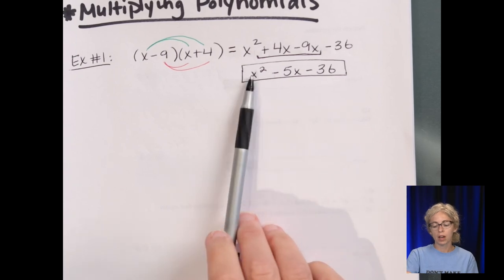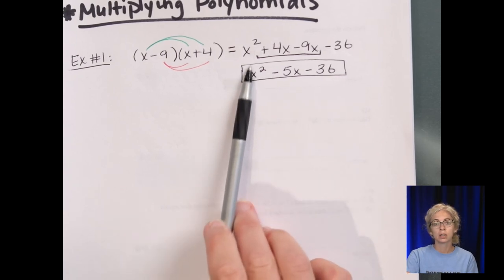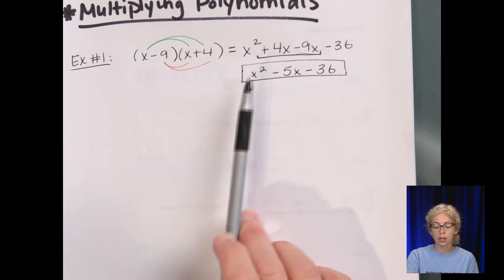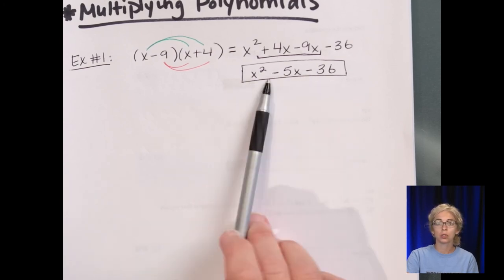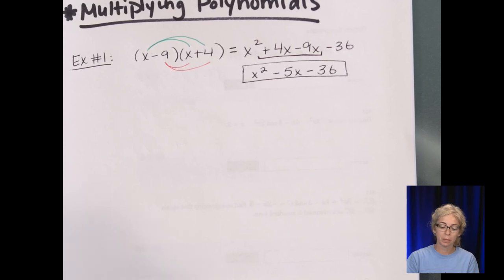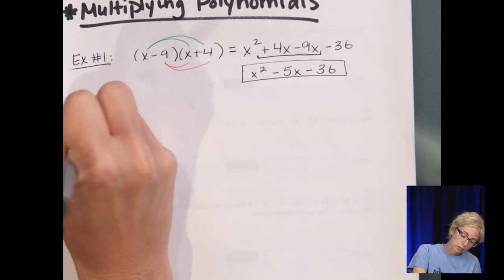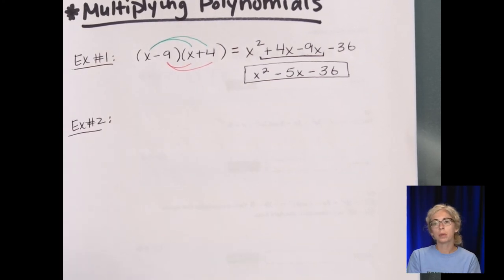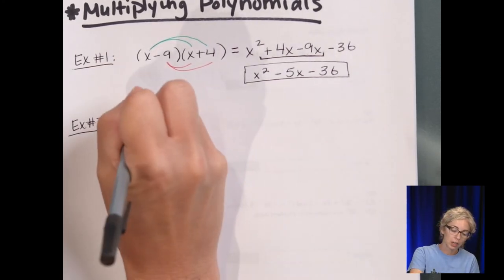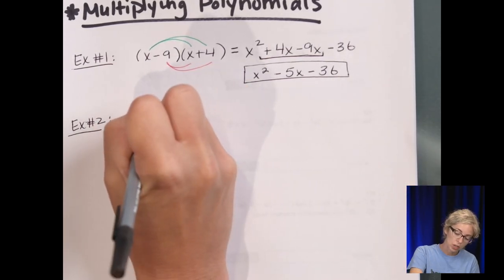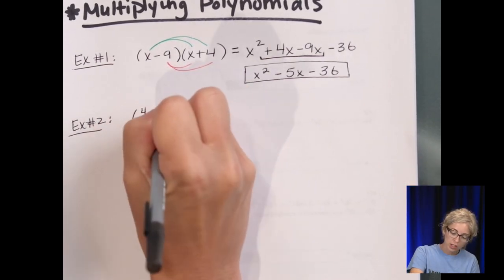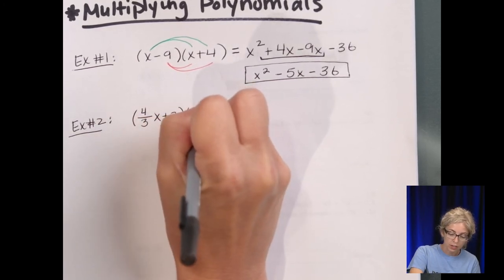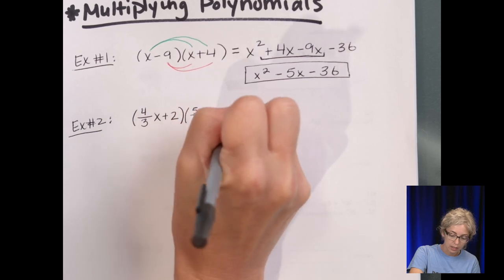Just to review the vocab: we have a leading coefficient of 1. The leading term is x squared. It's degree 2 or quadratic. It has 3 terms, so it's called a trinomial. Example number 2: we're going to do the multiplication of two binomials again, but this time look at some fractional coefficients. Let's do 4/3 x plus 2 times 5/6 x minus 6.